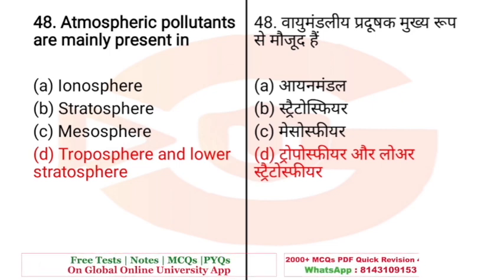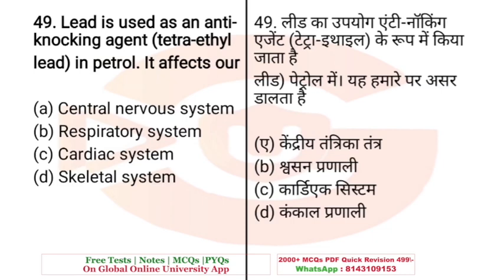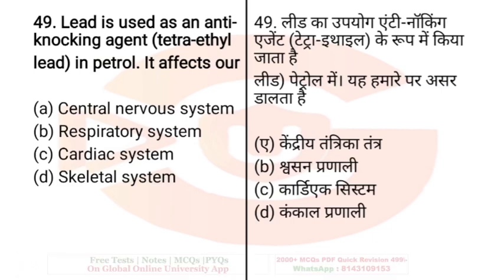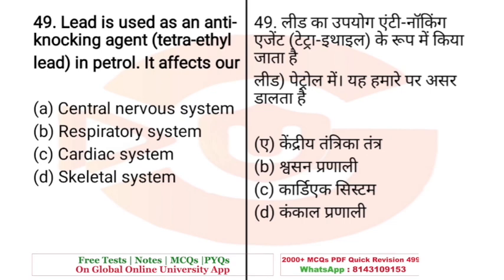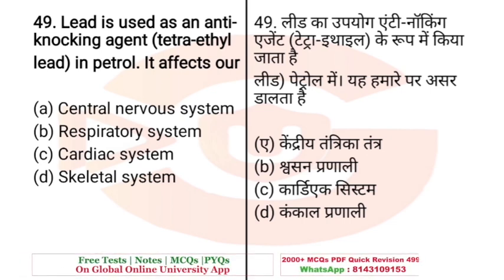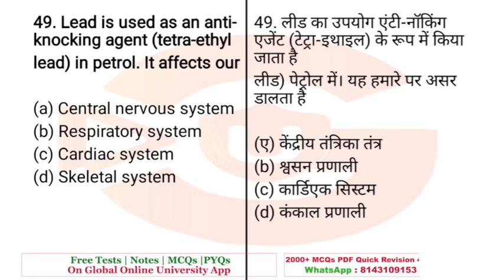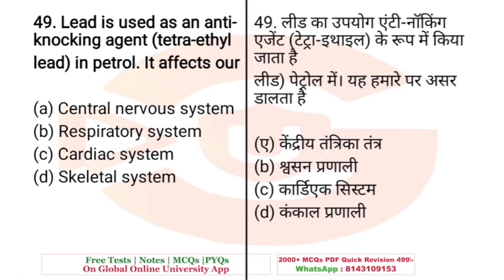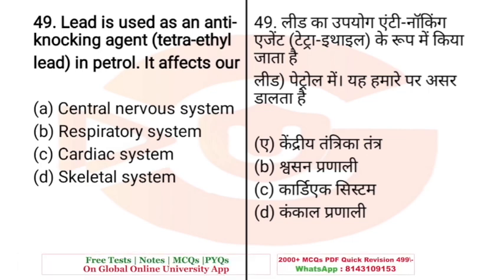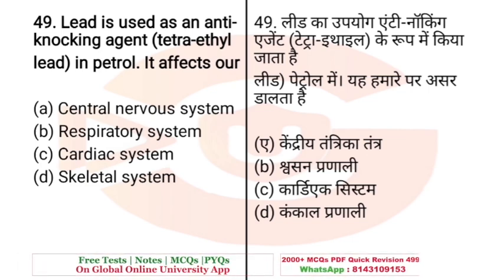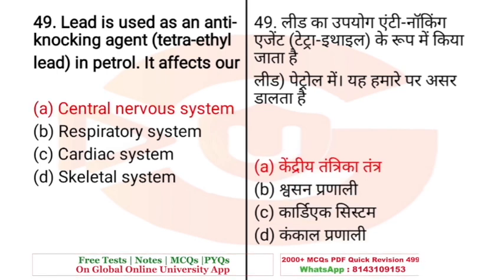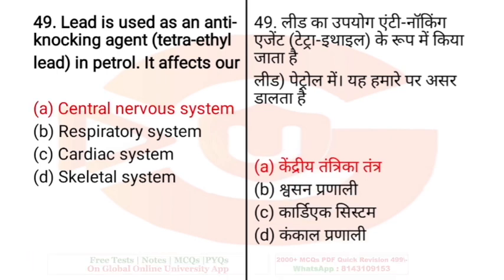Question: Lead is used as an anti-knocking agent — tetraethyl lead — in petrol. It affects our — A. Central nervous system, B. Respiratory system, C. Cardiac system, D. Skeletal system. The right answer is A — central nervous system.